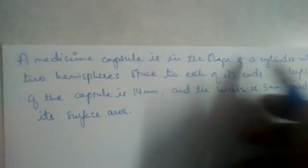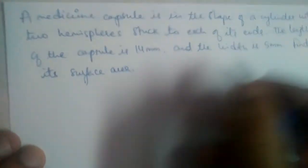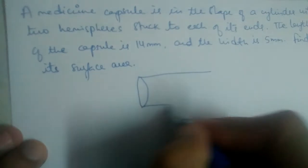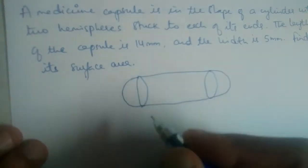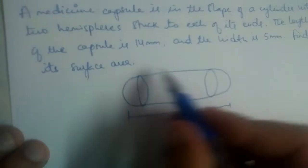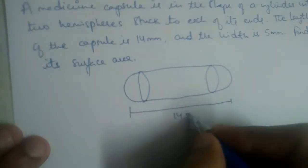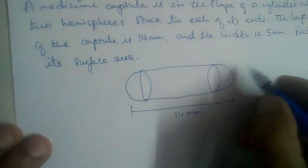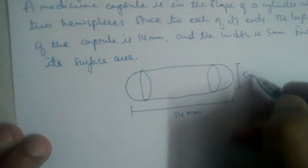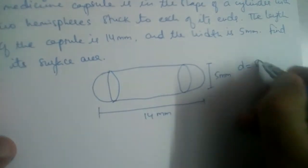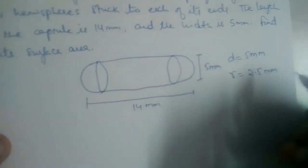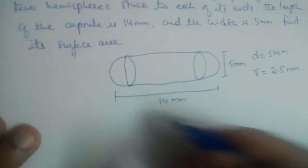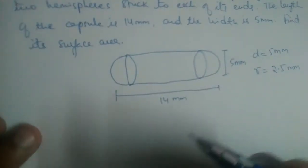A medicine capsule is in the shape of a cylinder with two hemispheres stuck to each of its ends. The total length of the capsule is 14 mm and the width is 5 mm. That means the diameter of the hemisphere is 5 mm, so the radius of the hemisphere will be half of that, which is 2.5 mm. We need to find the surface area of this capsule.